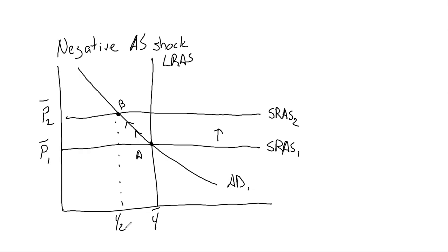Over time, this supply shock is going to play itself out in the economy and we have to return to the long-run aggregate supply curve. Firms slowly regain control of their prices, gradually decreasing them so we converge back down the aggregate demand curve from point B back to point A. That brings us back to our long-run aggregate supply at Y bar and price level P bar 1. So a supply shock in the short run increases prices, but it won't have a long-run effect on prices — eventually firms change the way they produce to reduce total cost.